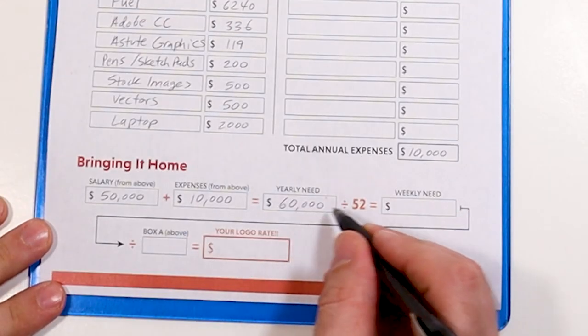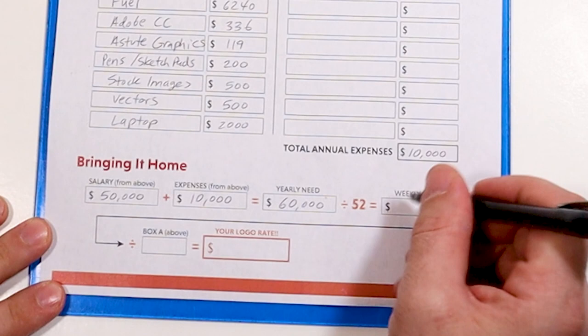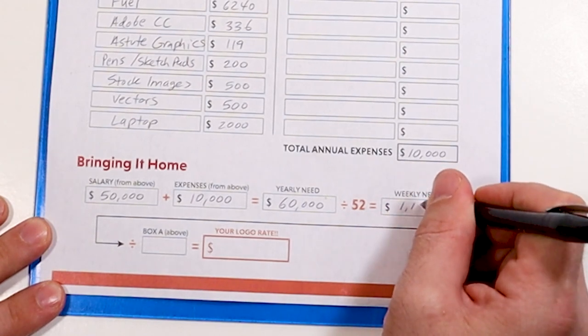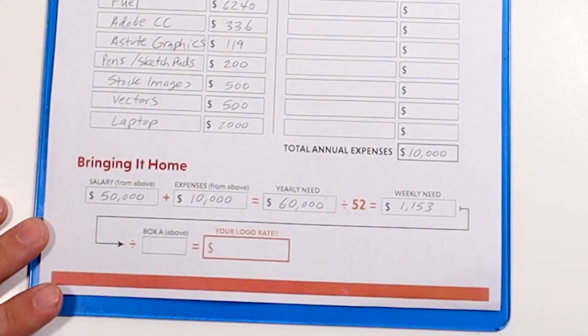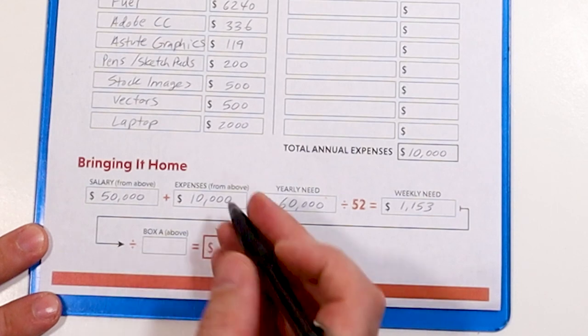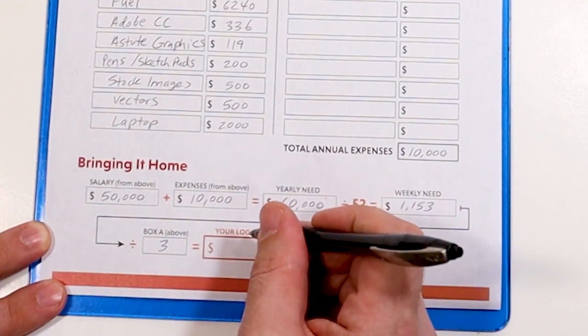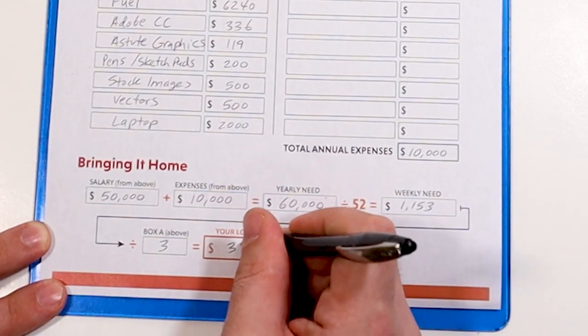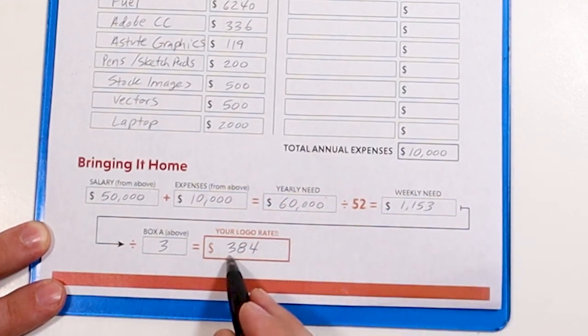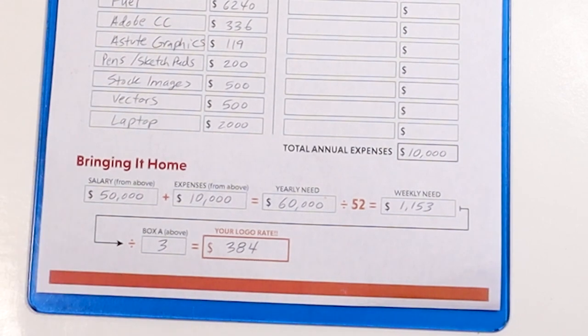Let's do some simple math to calculate our logo design pricing. We're going to convert the yearly amount of $60,000 into a weekly amount and divide it by 52. This comes to roughly $1,153 a week. Remember how we said we could complete three logos in a week? Let's divide that $1,153 again by three and we come to $384. And there you go — that's the standard rate for our logo package.